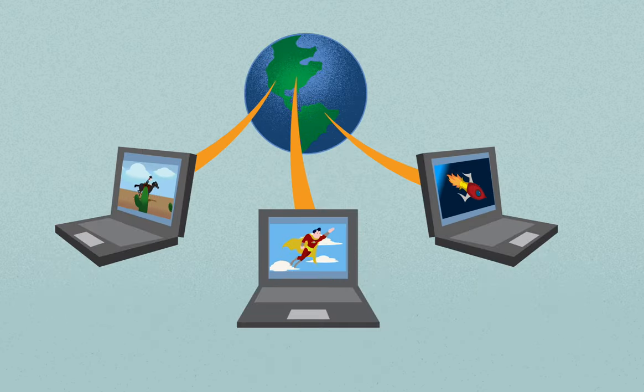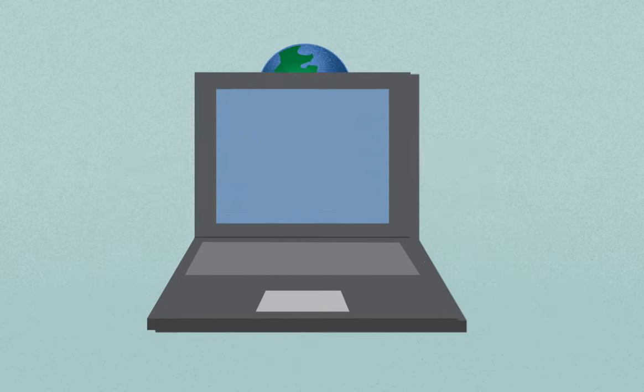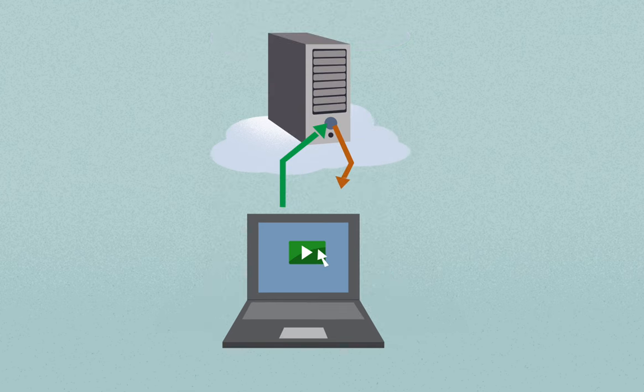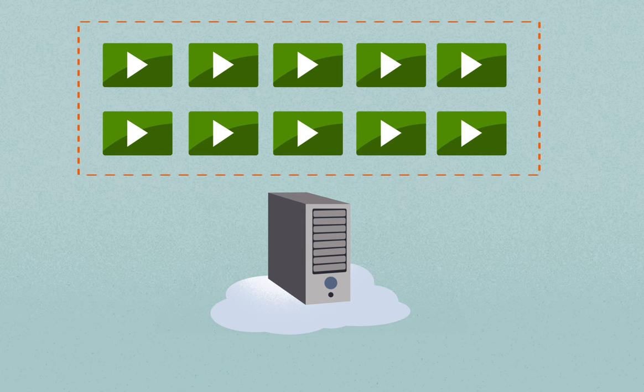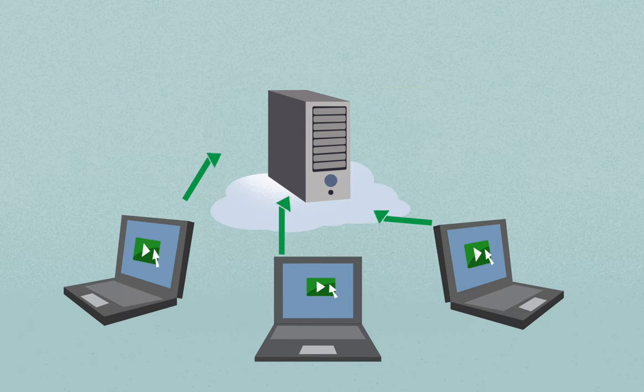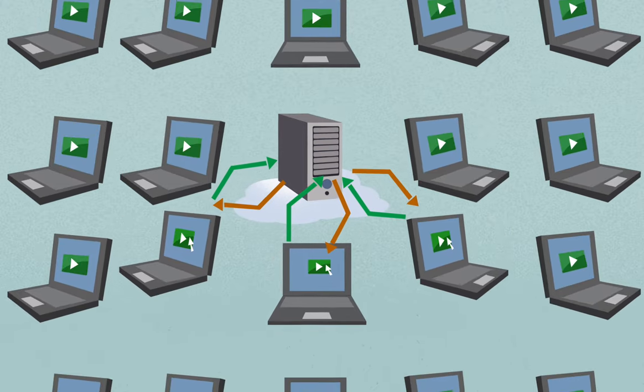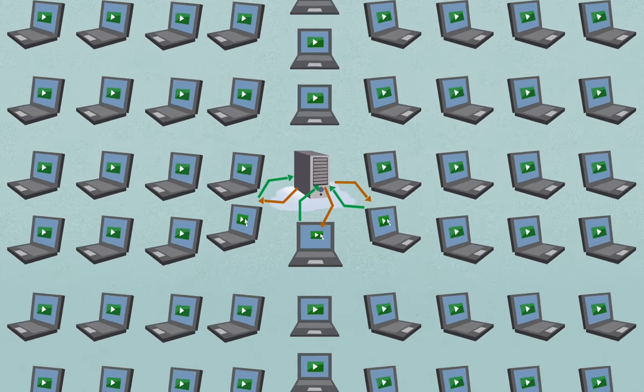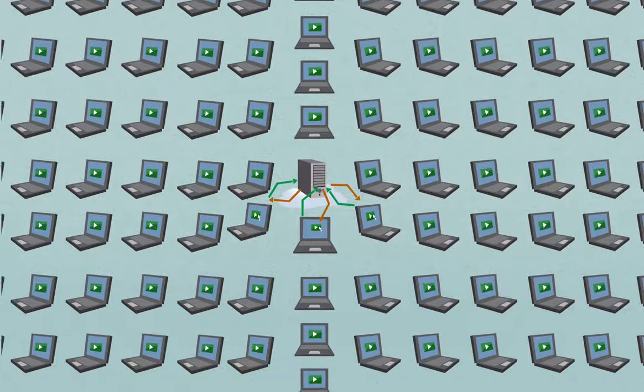The web is different because it's a unicast system. To watch a web video, you request the video from a server, as it's impractical for a website to continuously broadcast every video in its catalog on the chance that a few people might want to watch it. The server responds by sending you your very own stream straight to your browser. So if a thousand people request the video, the server has to send and manage a thousand streams.